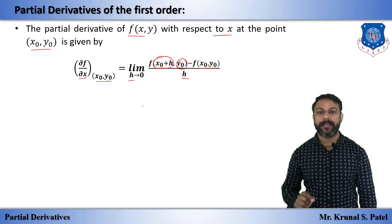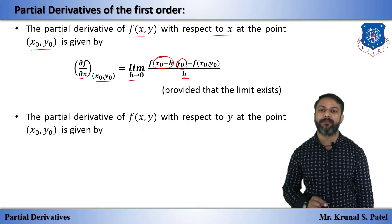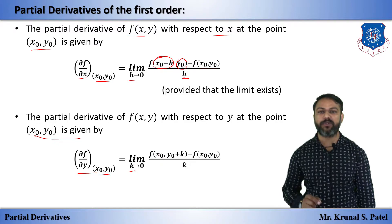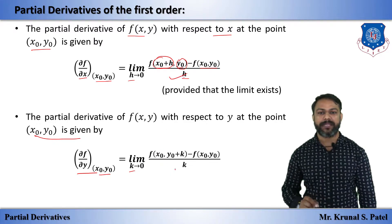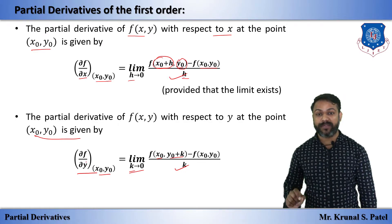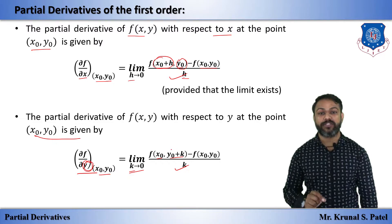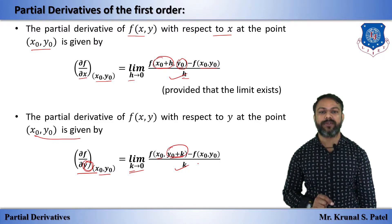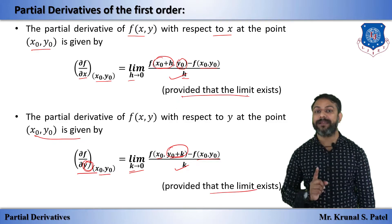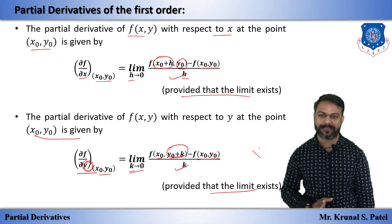Similarly, the partial derivative with respect to y at point (x₀, y₀) is given by del f / del y at (x₀, y₀) = limit as k tends to 0 of [f(x₀, y₀ + k) − f(x₀, y₀)] / k. Here the change appears in y only, so y₀ becomes y₀ + k while x₀ stays the same. In both cases, the limit must exist; if the limit does not exist, the derivative at that point does not exist.